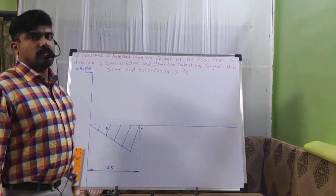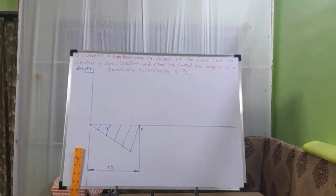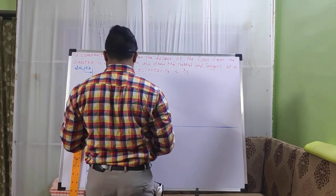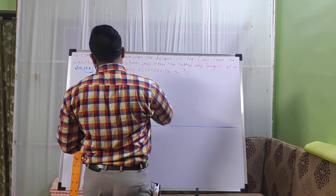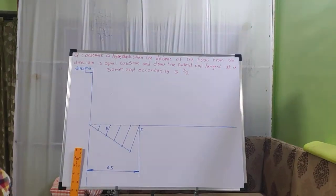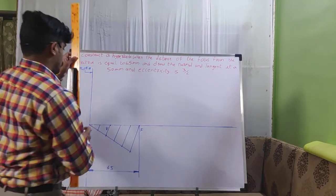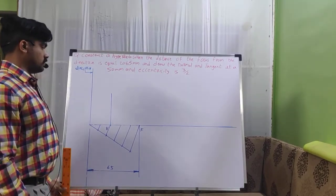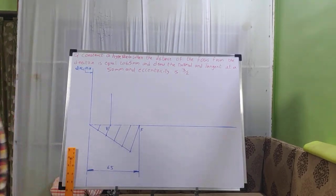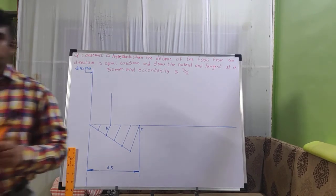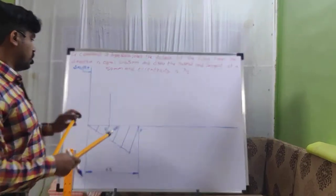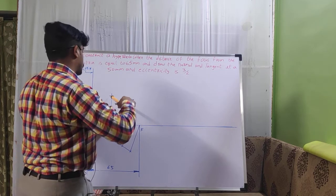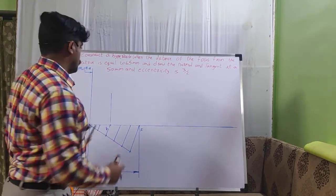At point V, you need to draw a vertical line with the help of the protractor. Take out the protractor, place it at V, mark 90 degrees, and join through V in order to get the point F'. Take out the compass and locate F'. Join V to F' in order to get the point F'.